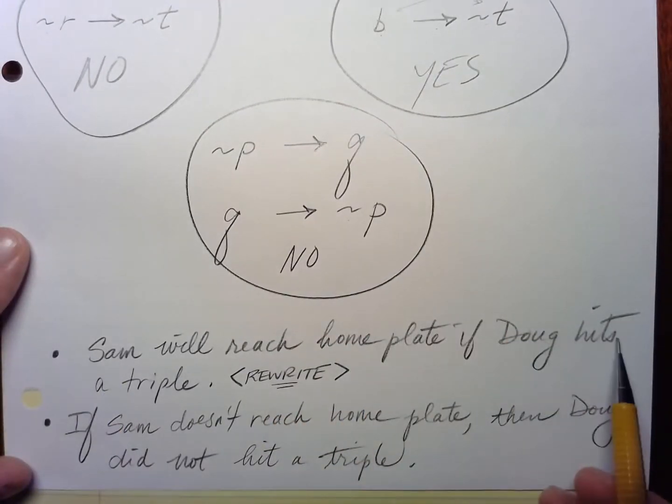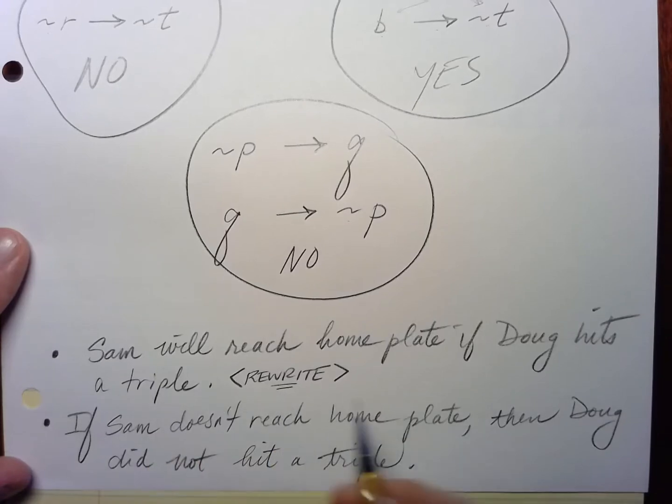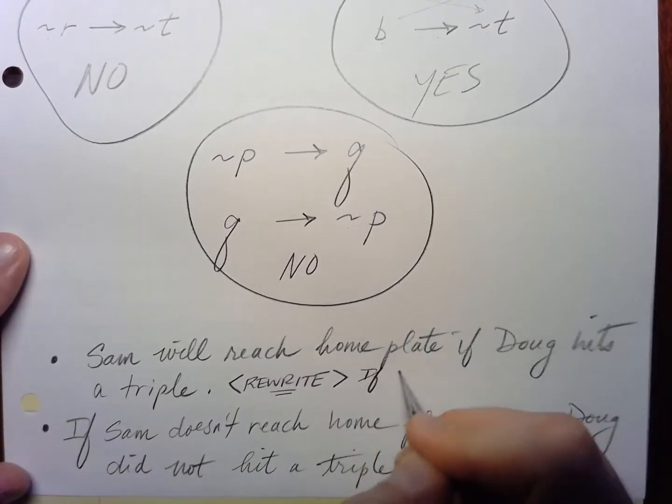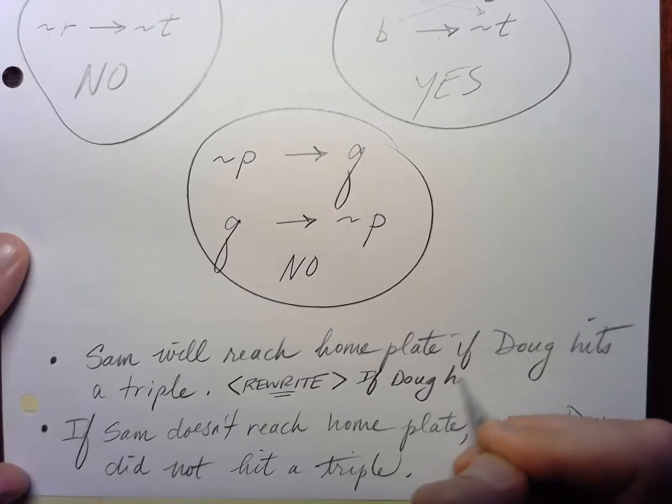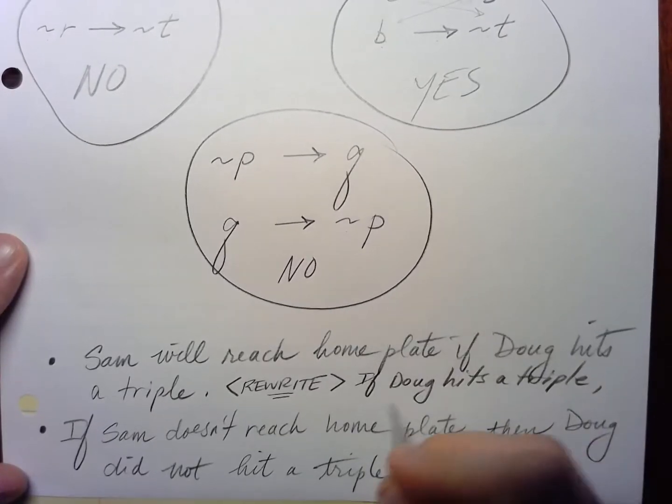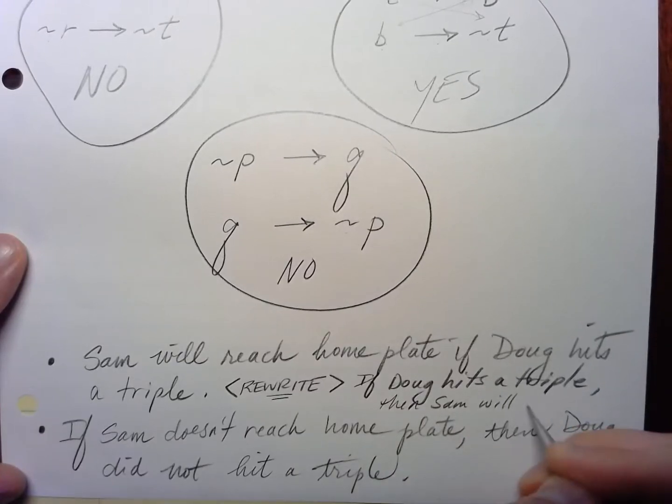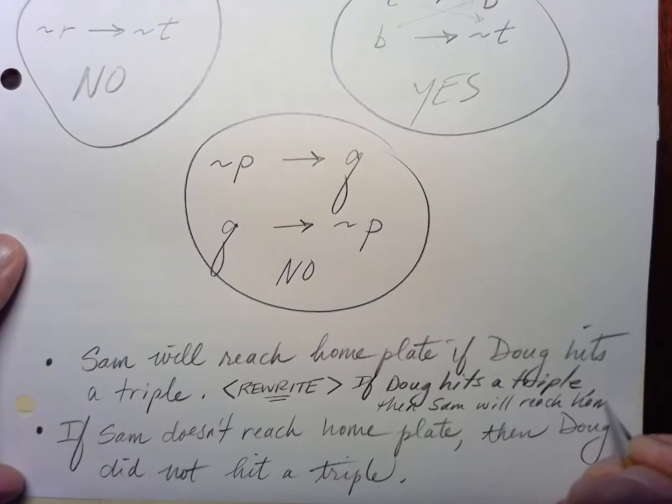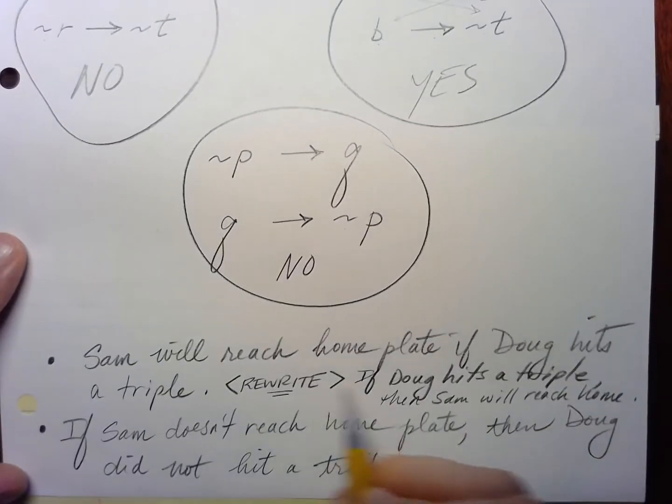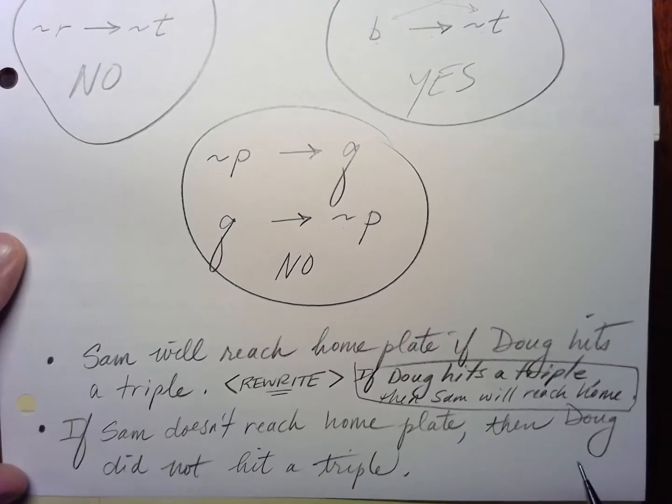Sam will reach home plate if Doug hits a triple. Well, let's rewrite this. This says, if Doug hits a triple, then Sam will do what? Then Sam will reach home base. So this is really what we're saying here. So if Doug hits a triple, then Sam will reach home base.